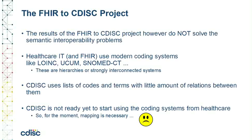The results of the FHIRPath to CDISC project do however not solve the semantic interoperability problems. After all, healthcare uses very modern coding systems such as LOINC, UCUM, SNOMED CT, and others, mostly pre-coordinated, whereas CDISC uses lists of codes and terms with little amount of explicit relations between them. As CDISC is not ready yet to use coding systems from healthcare, this unfortunately means that we need mappings. Developing such is however a lot of work.